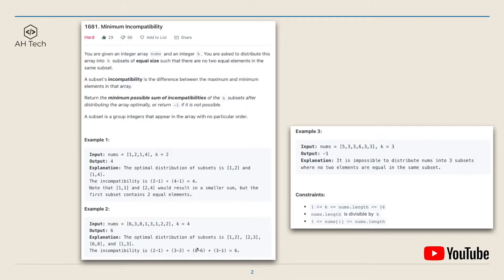For example 2, the optimal subsets are arrays [1, 2], [2, 3], [6, 8], and [1, 3]. The minimum incompatibility will be 6.